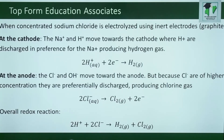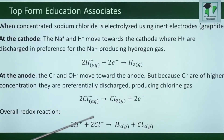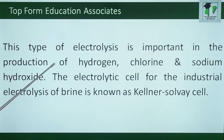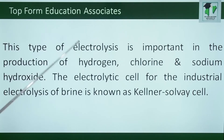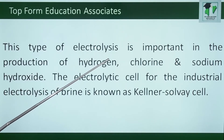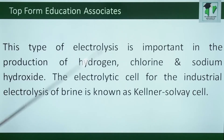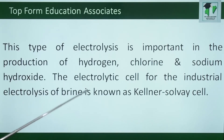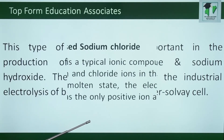The overall reduced reaction: hydrogen ions reacting with chloride ions to give hydrogen gas and chlorine gas. This type of electrolysis is important in the production of hydrogen, chlorine, and sodium hydroxide. The electrolytic cell for industrial electrolysis of brine is known as the Kellner-Solvay cell.